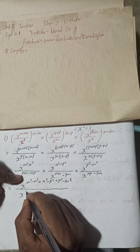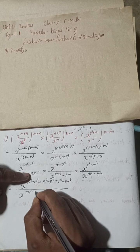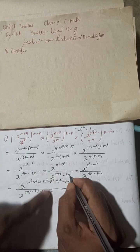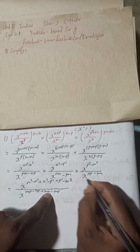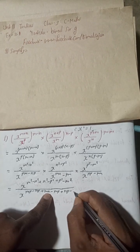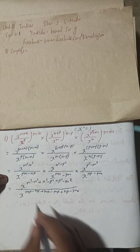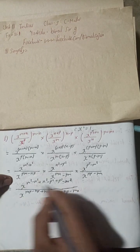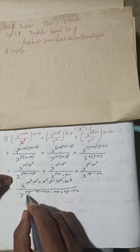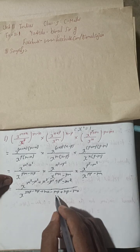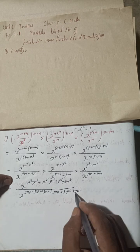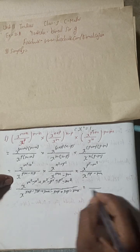Combining all powers: +m²−m² cancels, +n²−n² cancels, −p²+p² cancels, +mp−mp cancels, −np+np cancels, and +mn−mn cancels. So all terms cancel completely, and the total exponent of x is 0.